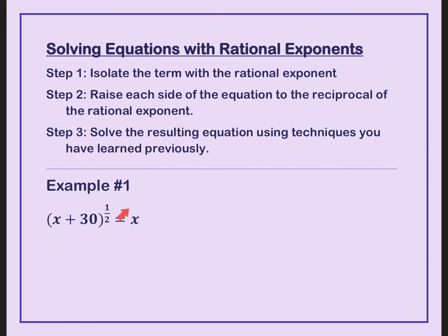So how are we going to solve this? First, whatever is in parentheses or whatever has that rational exponent, we want to get that by itself. After we get that by itself, we can eliminate this by multiplying it by the reciprocal of this rational exponent. But if you multiply this exponent by the reciprocal, you must also multiply the other exponent by the reciprocal.